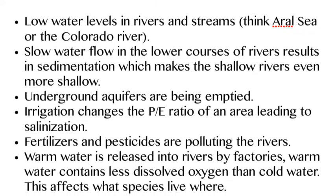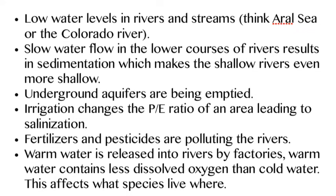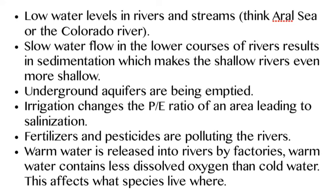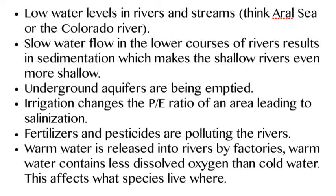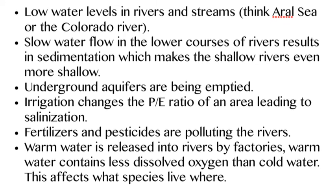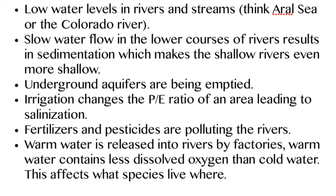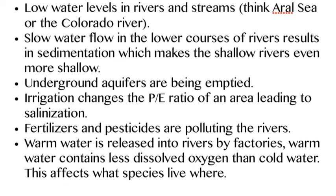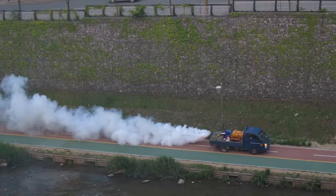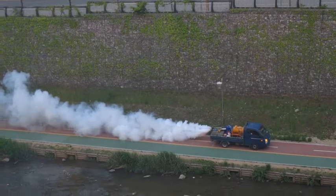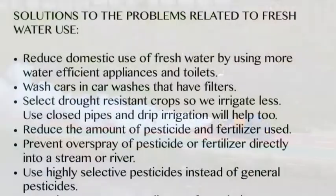Irrigation changes the precipitation-evaporation (PE) ratio of soil, making it more salty. Fertilizers and pesticides are polluting rivers, and factories are dumping warm water into rivers, which changes the amount of dissolved oxygen they can hold and changes what can live there.